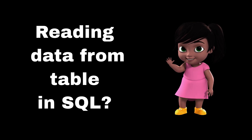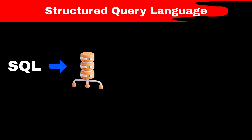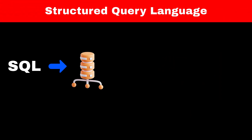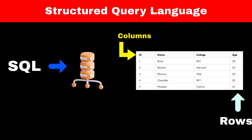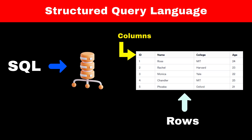How to read data from a table in SQL. SQL is a language which is used to communicate with relational databases, where data is stored in tables, that is in rows and columns format. Columns of a table are like attributes and rows are like actual values for those attributes.